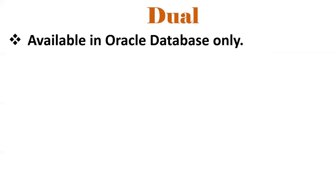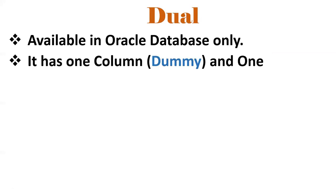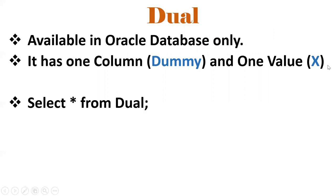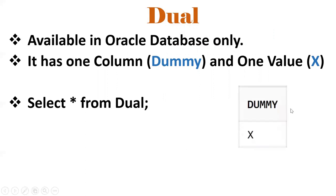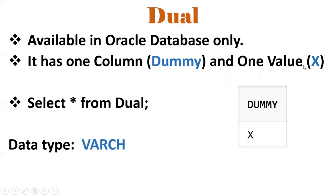Now we will see the DUAL table. DUAL is a special table available in the Oracle database. It has only one column and one value. The name of the column is DUMMY and the value is X. So if you query SELECT * FROM DUAL, you will get the result: column DUMMY with value X. The data type is VARCHAR2 and the data size is 1.